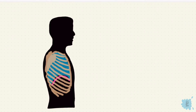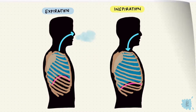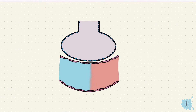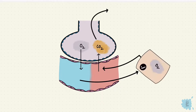The breathing cycle involves taking air into the lungs and breathing it out. The purpose of pulmonary ventilation is gas exchange. Oxygen diffuses into the capillaries and carbon dioxide diffuses out. The oxygen reaches the tissues and the carbon dioxide gets breathed out.